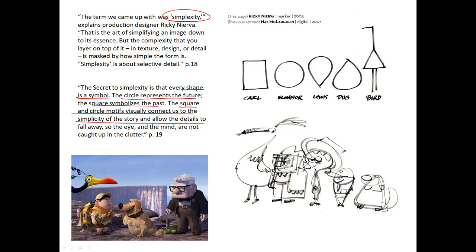And you can see that even in the secondary features. Like as a whole, he's a box, but his head is a box. His glasses are a box. His shirt is a box. His buckle is a box. So a lot of the times, all of those forms are repeated.